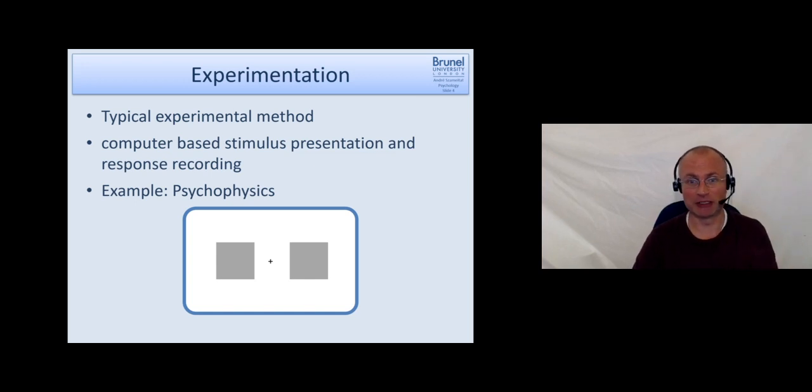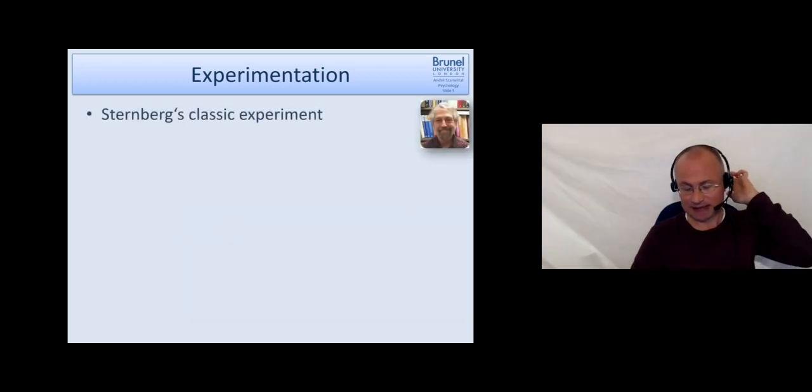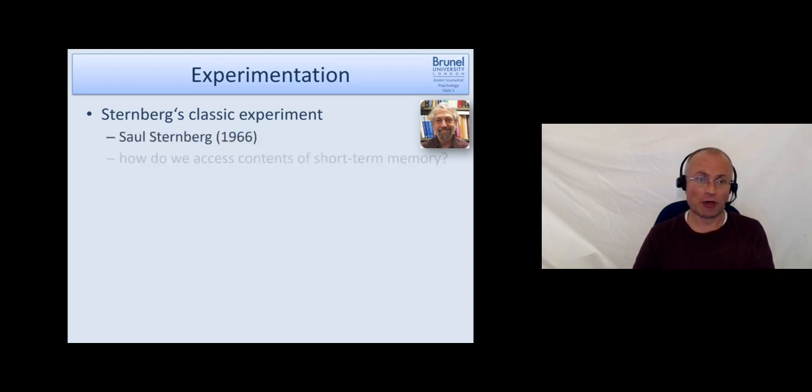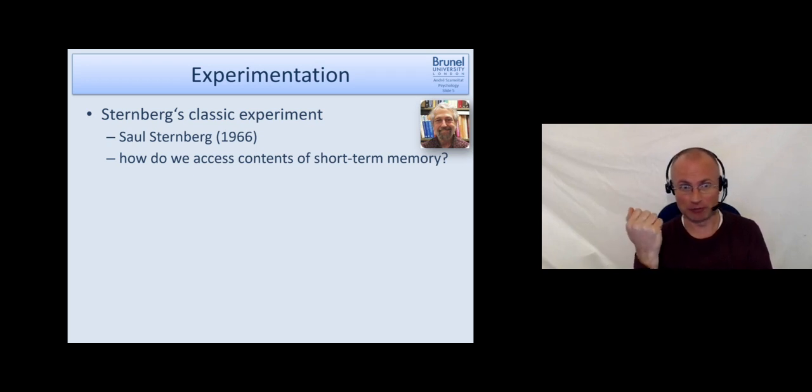Another very classic experiment which is very well suited to demonstrate this approach is Sternberg's classic experiment on memory retrieval from short-term memory, or memory search. The idea or the question he had was, suppose you have something stored in your short-term memory, like somebody told you just a phone number, and then you're asked, okay, in this phone number is there a 5 in the number? Then you have to access this short-term memory and have to look for that.